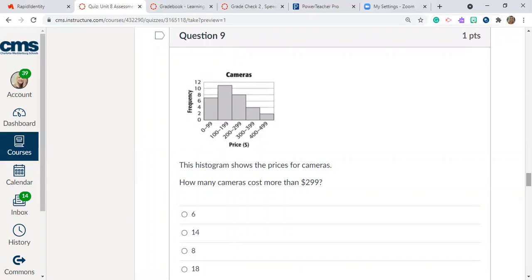Question number nine. We have the same histogram here. So we have the price over here, showing the price for cameras. Okay, so we have the price over here. And then the number of cameras over here. How many cameras cost more than $299? 6, 14, 8, or 18?